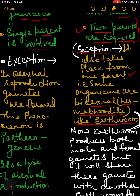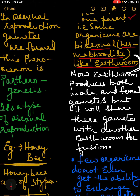We know that the earthworm is a single organism but it contains both gametes — it produces both male and female gametes. However, the earthworm will share these gametes with another earthworm for fusion. The single earthworm's male gamete will not fuse with the female gamete of the same earthworm.